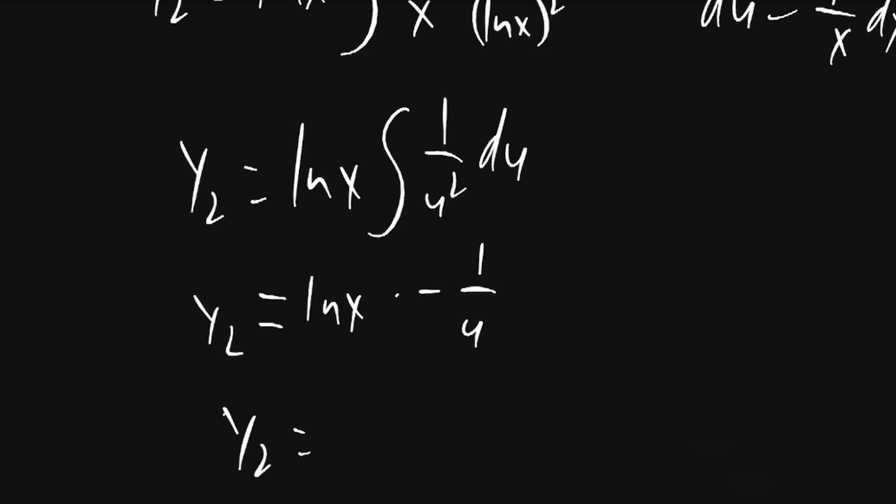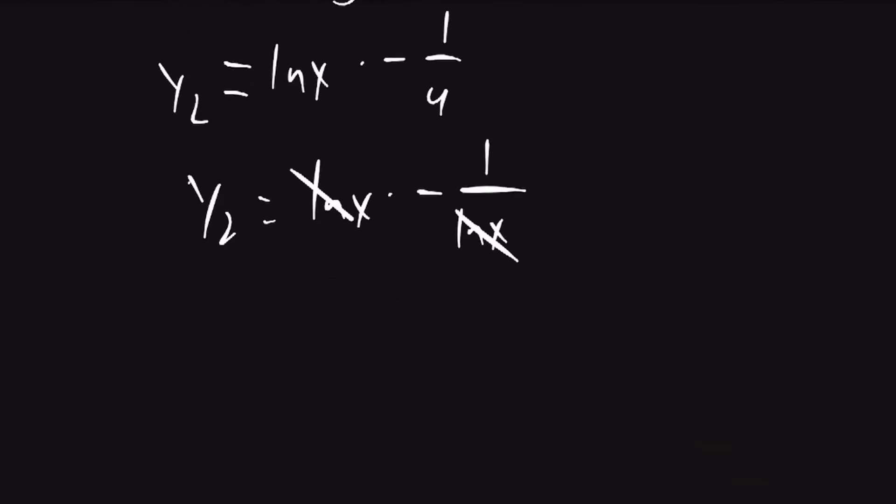So y2 is going to be equal to lnx times negative 1 over lnx. The lnx will cancel.